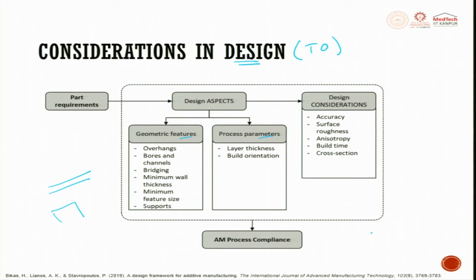Layer thickness affects accuracy, surface roughness, anisotropic behavior, build time, and cross section area. All these are taken into account for AM process compliance to produce a cost-effective, good quality part meeting the customer's requirements — whether a shaft, rotation mechanism, or bracket.